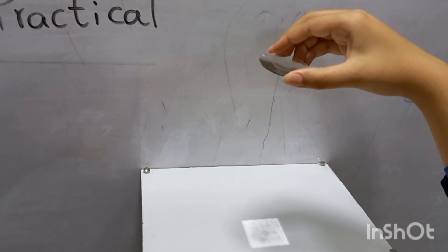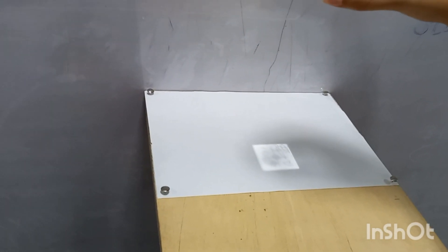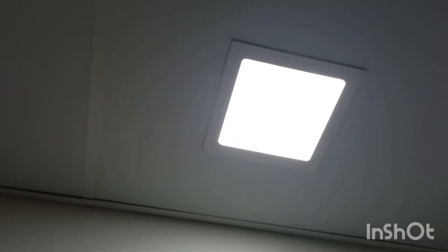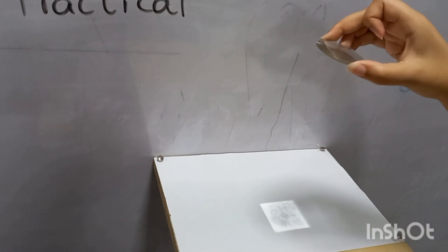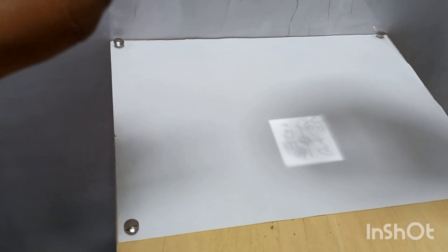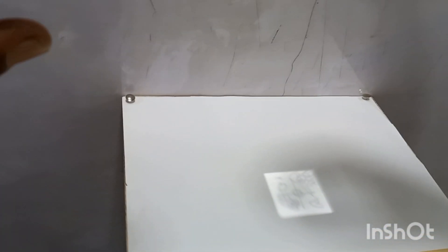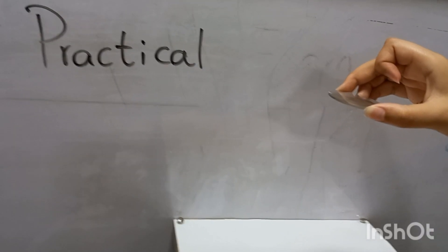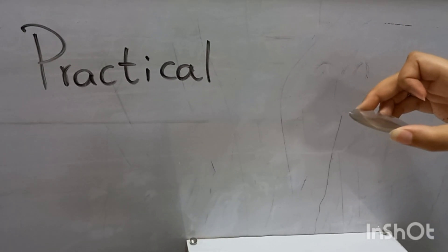Here we have a convex lens and a screen — a drawing board with white paper. The object is the light in the ceiling with black lines drawn on it, but now this object is near to the lens. I will move the lens up and down until a sharp, clear image is formed on the screen. When the sharp image is formed, the distance between the lens and the screen is called v, and the distance between the lens and the object is called u.